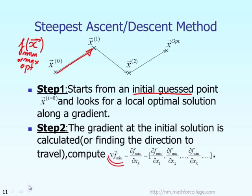Remember, in this general case, the function f could depend on many variables like x1, x2, x3, and so on. So the gradient of f means the partial derivative of f with respect to x1, partial derivative with respect to x2, and so on — that would be a vector. So knowing the initial guess x zero, the best direction to travel from there will be the direction of the gradient of the objective function.